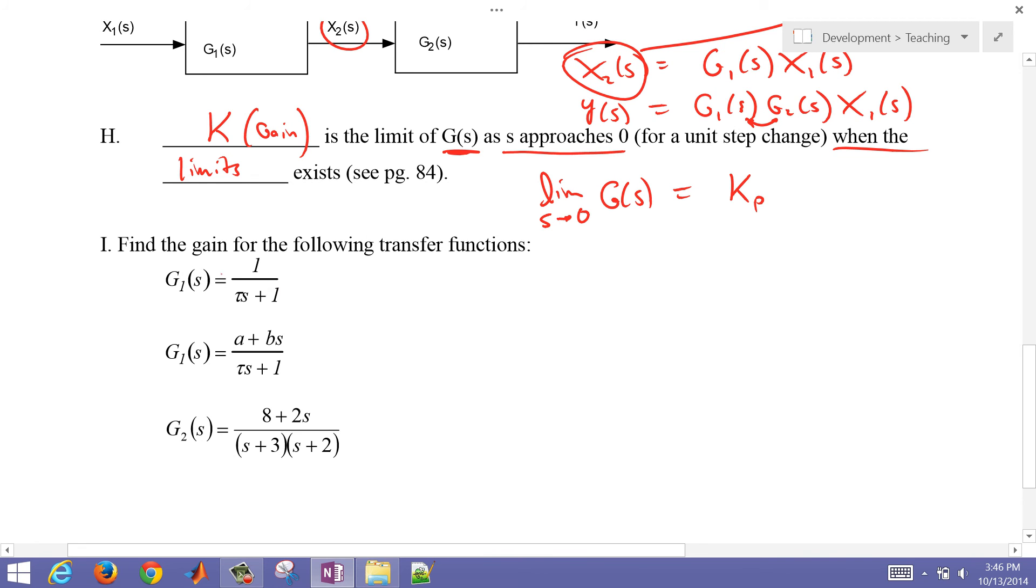Now, in this case, if we plug in limit s goes to 0, then this is going to equal 1, because that went to 0. Now, let's do it for the next one as well. You know, as this goes to 0 and that goes to 0, that's going to equal a.